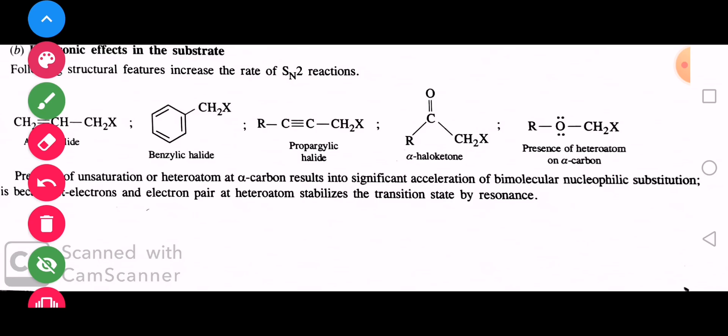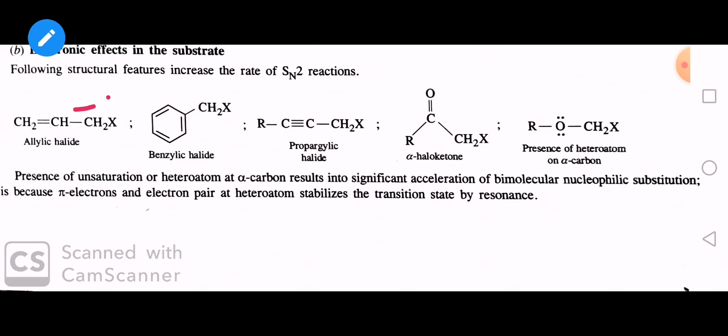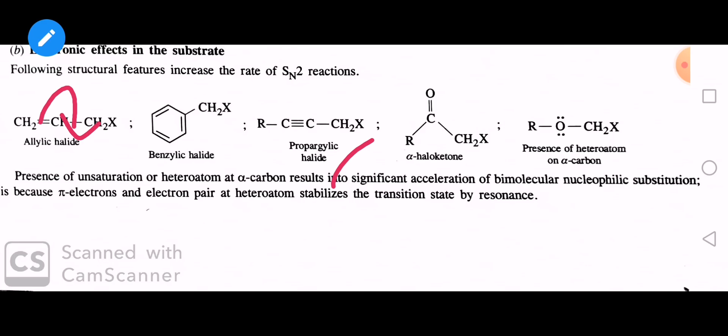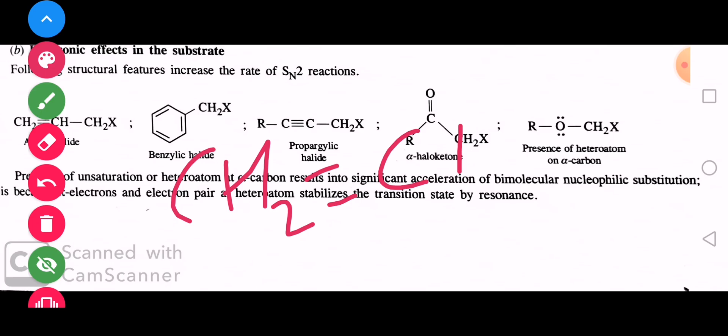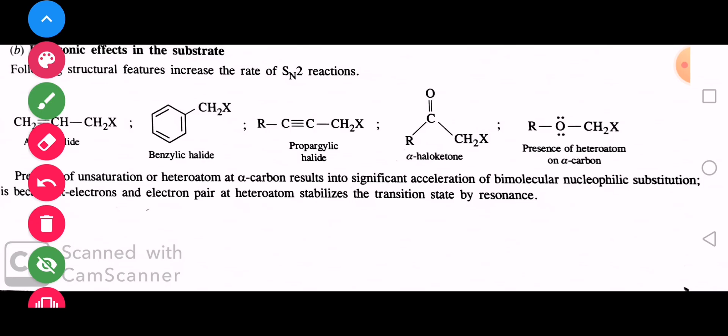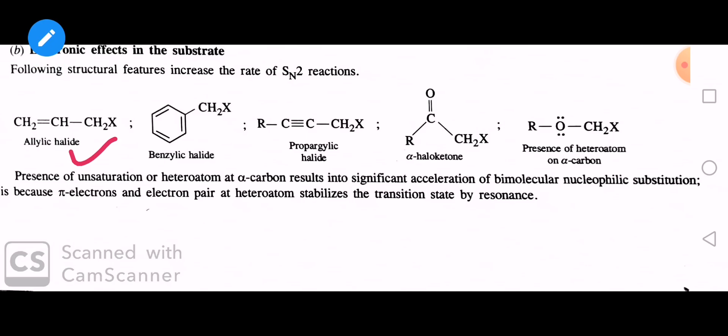Electronic factors भी transition state को stabilize करते हैं। अगर allylic halide है जैसे CH₂=CH-CH₂X, तो transition state में resonating structures बनते हैं जो इसे stabilize करते हैं। Benzylic halide में भी, partial negative charge और partial positive charge के साथ, resonance के कारण transition state stabilized होती है। Allylic और benzylic halides में SN2 mechanism easily होता है।